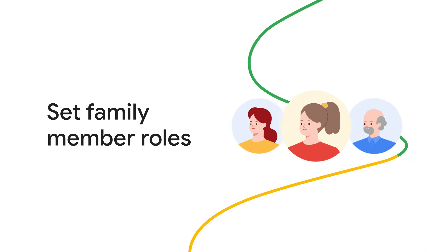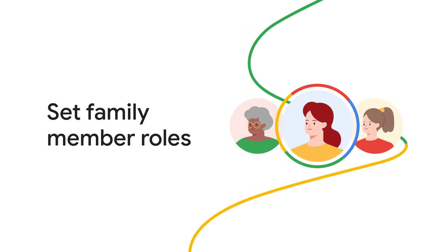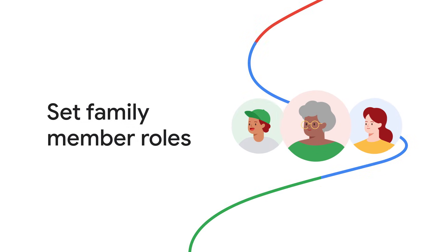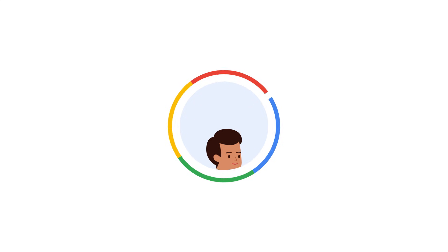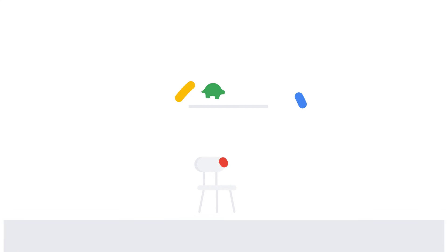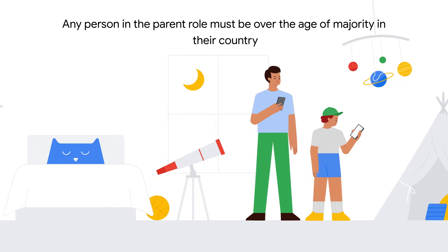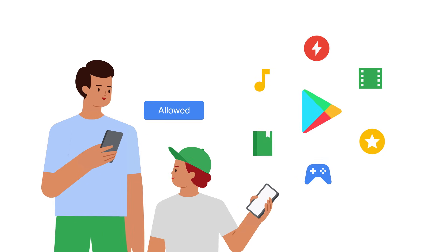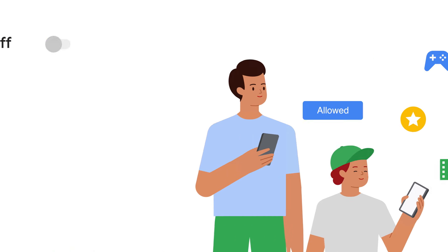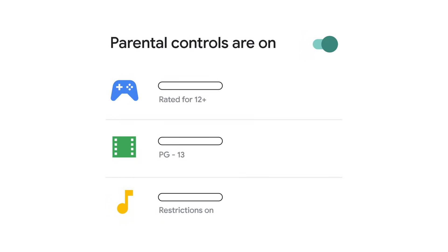There are several different family member roles you can set to customize your family group. Each family member role has separate permissions and restrictions. Now we'll go over the parent role. Note: any person in the parent role must be over the age of majority in their country. Parents can approve Google Play purchases, change parental controls and family members' purchase approval settings.